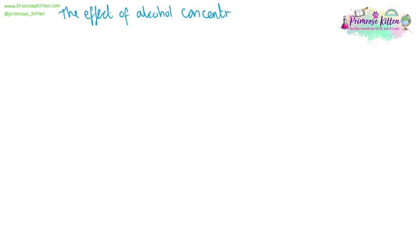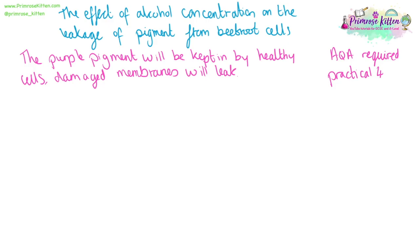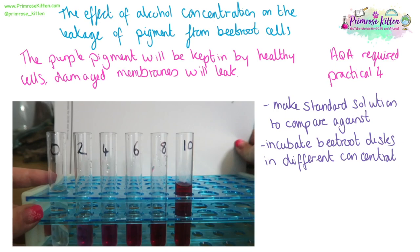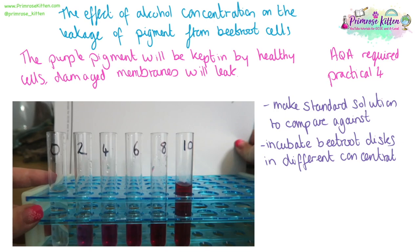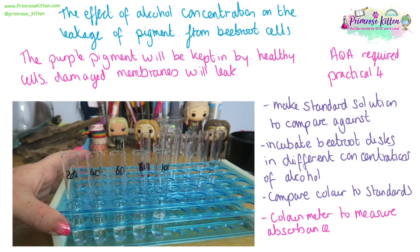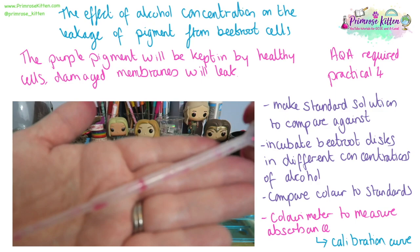One of the required practicals looks at the effect of alcohol concentration on the leakage of pigment from cells. The purple pigment is kept inside cells by healthy membranes, whereas damaged membranes will leak the pigment. You need to make a standard solution to compare tests against. Incubate your beetroot discs at different concentrations of alcohol and compare the colour to the standards. To make this more accurate — a quantitative rather than qualitative test — use a colorimeter to measure absorbance and draw a calibration curve.